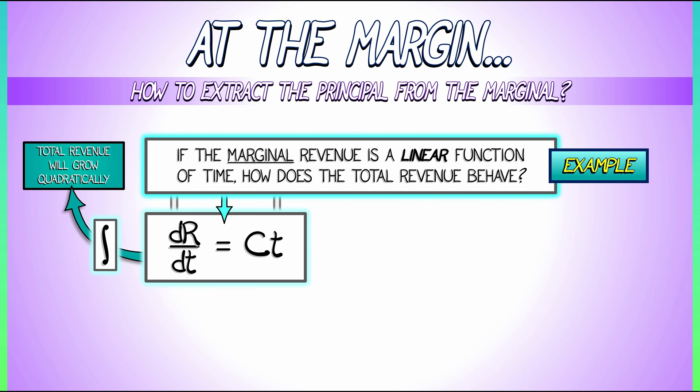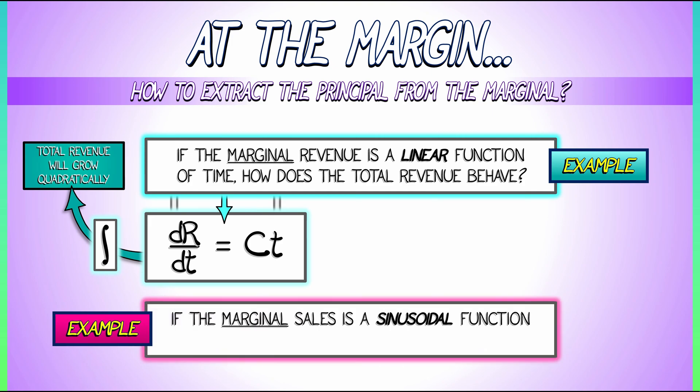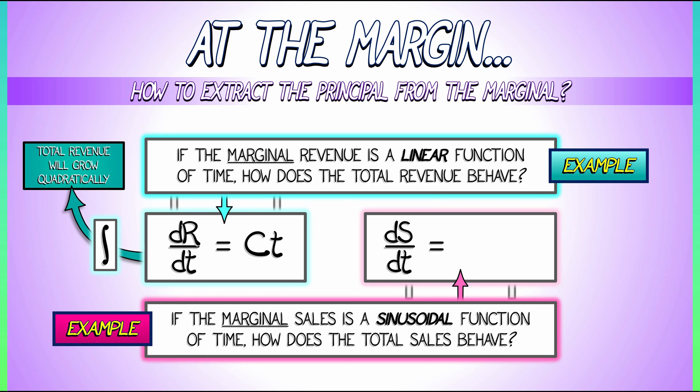Okay. How about a different example? Let's say that we're working with some other marginal data. I don't know. Marginal sales. Let's say that that is a sinusoidal function of time. How does the total sales behave? If we know that the marginal sales is sinusoidal, that means that ds dt, the derivative of sales with respect to time, is a sinusoidal function. So let's call that a times sine of t, where that a is a constant representing the amplitude. What function has derivative sine, let's see, minus cosine, minus cosine.